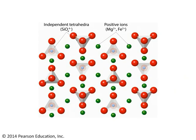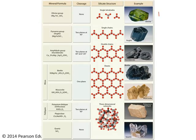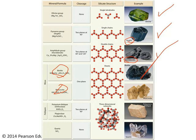Independent tetrahedra are bonded to other positive ions like magnesium or iron — this is the case with olivine, the mineral that makes up most of the peridotite I showed earlier. Single-chain silicates are called pyroxenes; augite is a specific example. Double-chain silicates are members of the amphibole group, with hornblende as our example. Sheet silicates include biotite and muscovite, both examples of micas. And lastly, the more complex three-dimensional networks fall into two main groups: the feldspars and quartz.